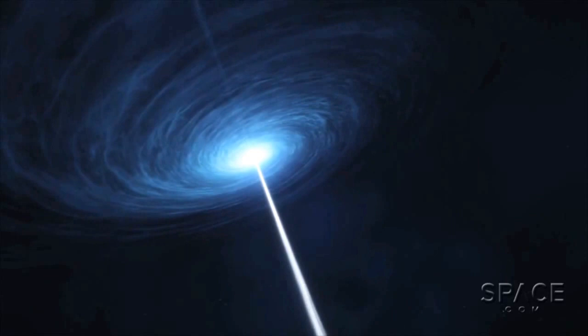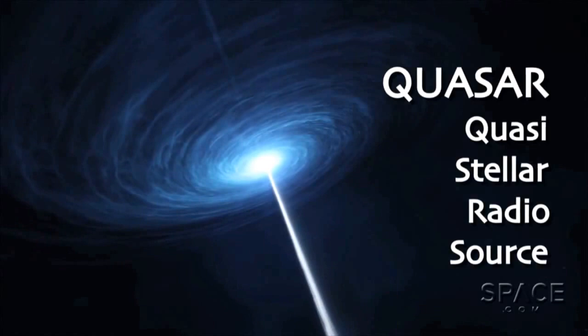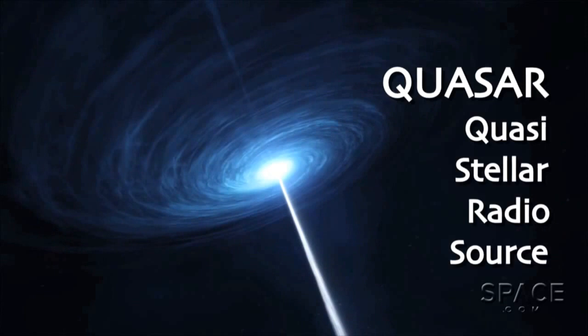Astronomers on Earth first became aware that quasars existed in the 1950s. Back then, the term quasar meant quasi-stellar radio source because they looked like very bright points on the sky at radio frequencies.